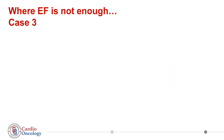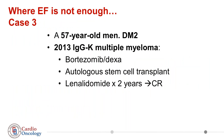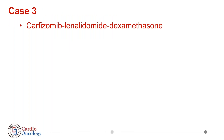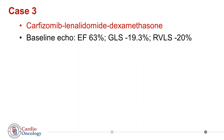My first case is a 57-year-old man with a past history of diabetes. He was diagnosed with multiple myeloma a few years ago and was treated initially with bortezomib and dexamethasone, followed by autologous stem cell transplant. He also received lenalidomide for two years, achieving complete remission. In 2017, he developed symptomatic progression, and treatment with carfilzomib, lenalidomide, and dexamethasone was planned. His baseline echo was normal — ejection fraction, GLS, and even right ventricular function were completely normal.